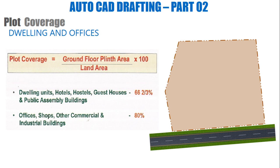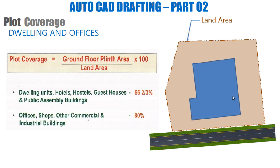The topic covers dwelling and offices. Here I have an equation: plot coverage equals ground floor plinth area divided by land area, multiplied by 100. The land area is the denominator — that is the total area of the land plot. In the numerator, we have the ground floor plinth area, which is the footprint of the proposed building at ground floor level.